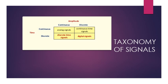The taxonomy of a signal: we have amplitude, which can be continuous or discrete, and time, which can also be continuous or discrete. When both amplitude and time are continuous, we call it an analog signal. When amplitude is discrete and time is continuous, it is a sampled signal. When amplitude is continuous and time is discrete, it is a discrete time signal. When both are discrete, it is a digital signal.